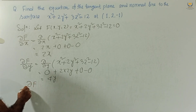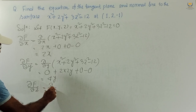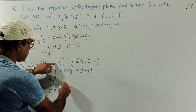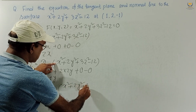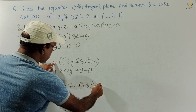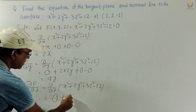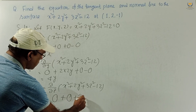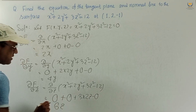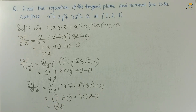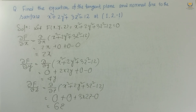Next, ∂f/∂z: this is ∂/∂z of (x² + 2y² + 3z² - 12). Differentiating with respect to z, x and y constant: x² gives 0, 2y² gives 0, 3z² gives 3×2z = 6z, and the constant gives 0. So ∂f/∂z = 6z.